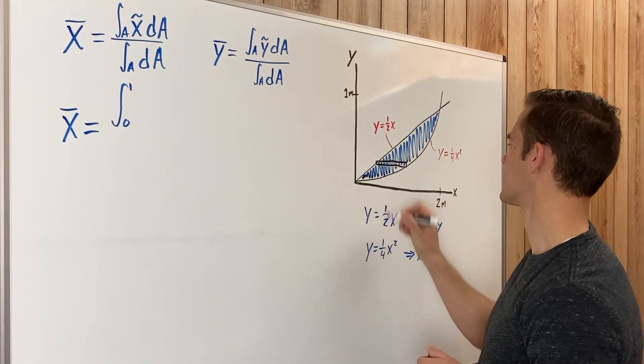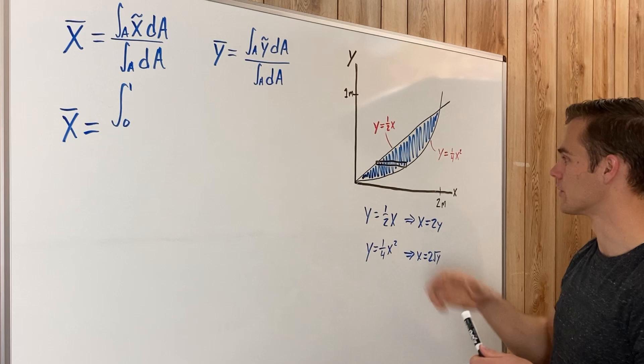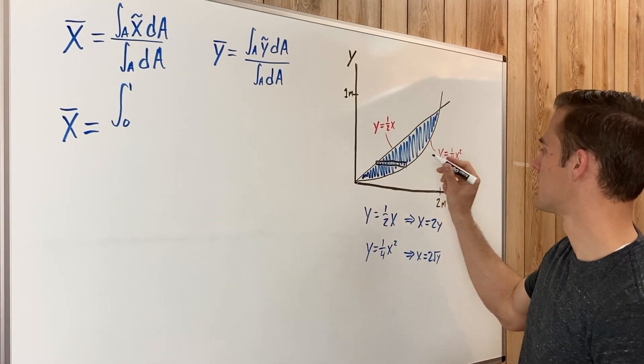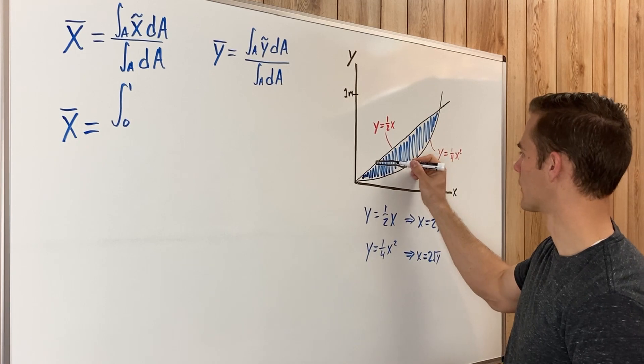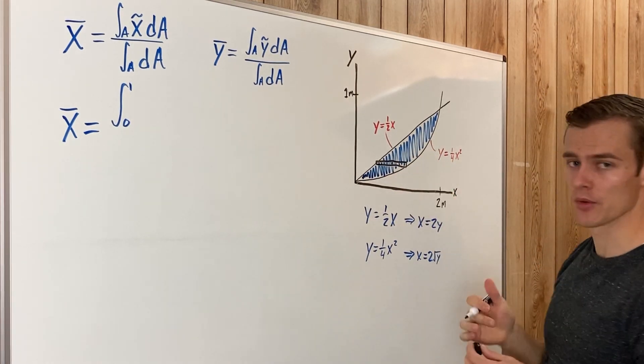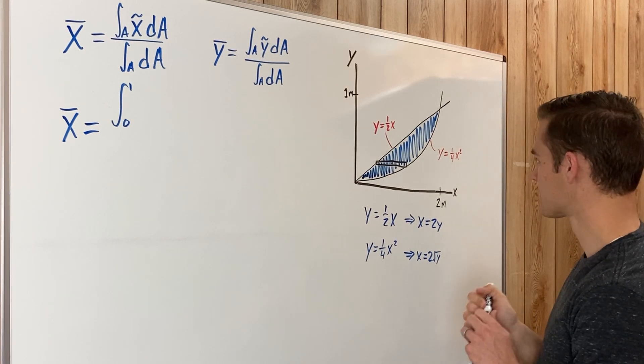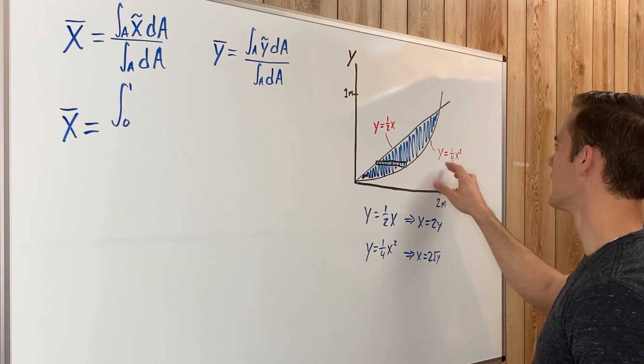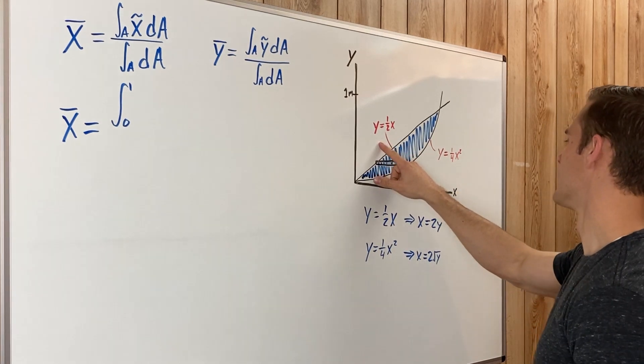And X tilde is going to be the center of mass of one of these little strips, so one of these horizontal strips. If you think about this, maybe this is like an exaggerated view of one of those horizontal strips. Now the X center of mass of this horizontal strip is going to be right here in the middle, which is halfway between both of these two functions.